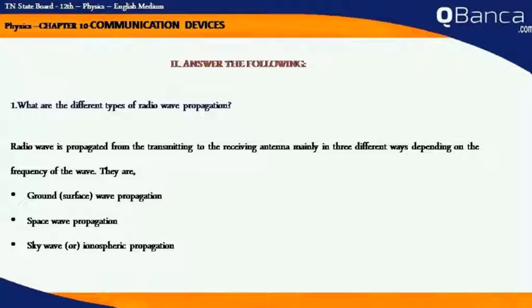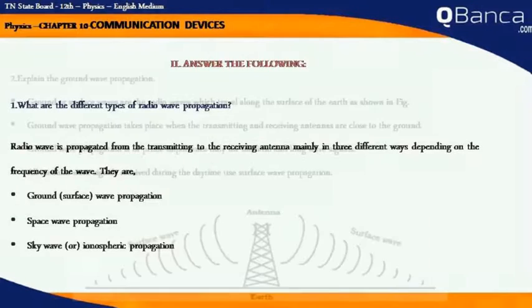What are the different types of radio wave propagation? Radio waves are propagated from the transmitting to the receiving antenna mainly in three different ways depending on the frequency of the wave. They are ground wave propagation, space wave propagation, and ionospheric propagation.